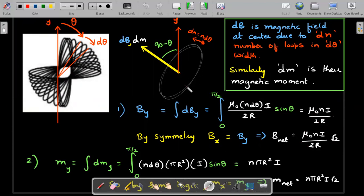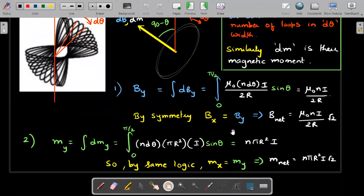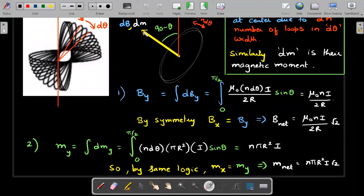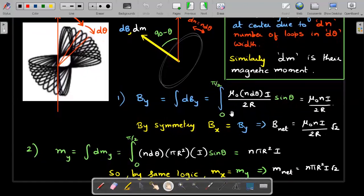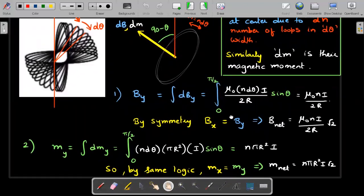Now coming to the m, I think the same treatment should be there for m also. dm in y direction, first of all I'll integrate number of turns into the area into current and don't forget the sine theta. Then you'll get this, same logic mx should be equal to my, therefore m net should be multiplied by root 2. This has very good potential of how JEE Advanced questions are asked.